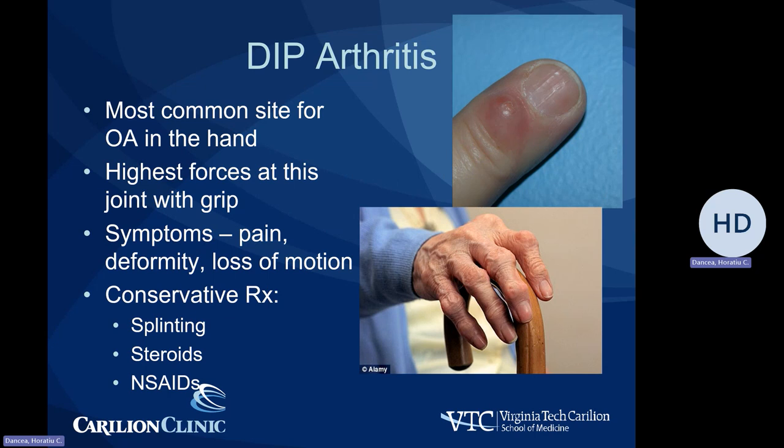Talking about joints in particular, I would start distally with DIP joint arthritis — the distal interphalangeal joint — which is the most common site for osteoarthritis in the hand. The index finger DIP joint stands out as being truly the most common site for osteoarthritis in the hand, because the highest forces with grip per surface area occur at the DIP joint. Symptoms are pain, deformity (which occurs later in the disease process), stiffness, and loss of motion.